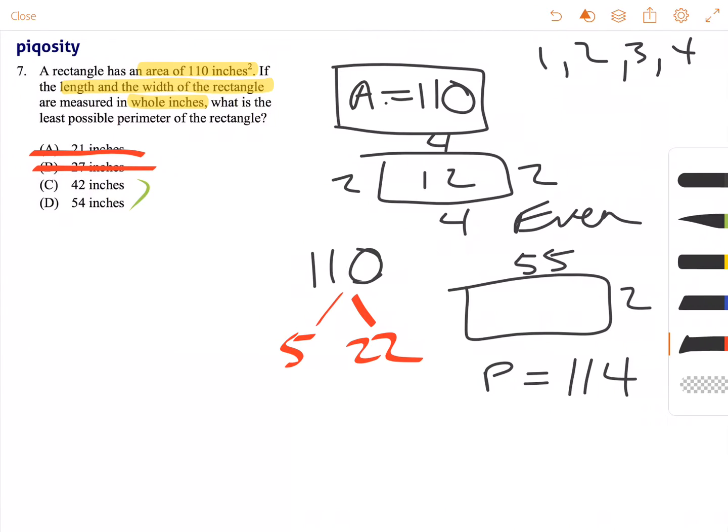And if we have a rectangle with those measurements, 22 and 5, our perimeter will be 27 plus 27, so 54 is our perimeter. So that's answer choice D.